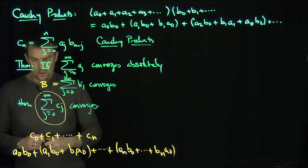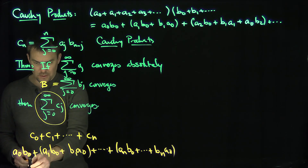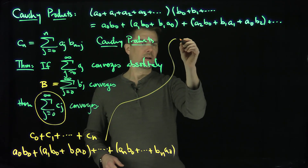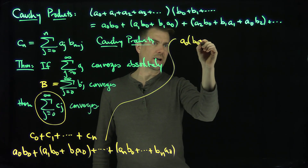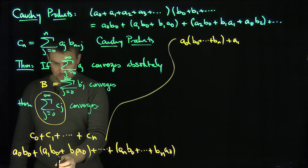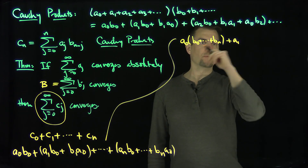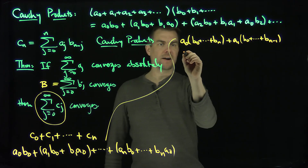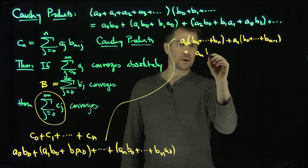What I'm going to do is factor things nicely. I really have a factor of a0 times the b partial sums up to n, plus a1 times the b partial sums but only up to b(n−1) — because a1 won't reach bn — and so on, and then finally I have an, which only gets a b0 term.